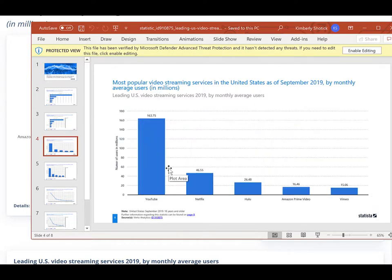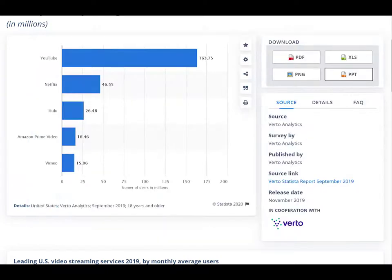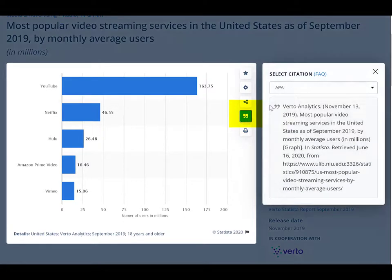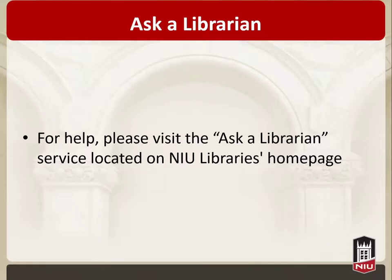Each slide already has a citation to give credit to the source. If we want to cite this information in our Works Cited or References page for a research project, just click on the quotation mark symbol on the graph. Select your preferred citation style in the drop-down menu and cut and paste the information, but you may need to edit so that it's correct. For additional help, use the Ask a Librarian service located on the NIU Libraries homepage.